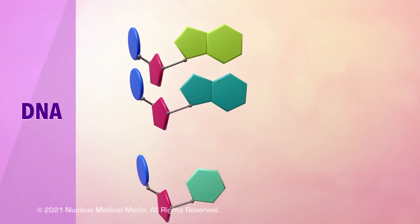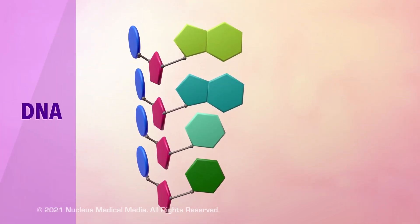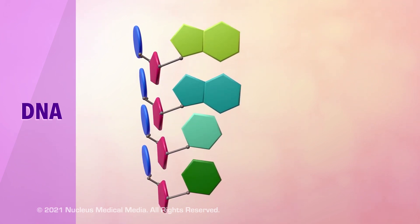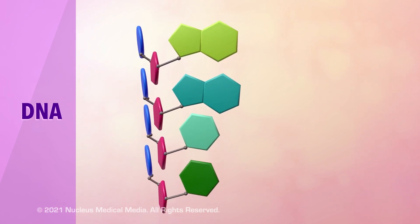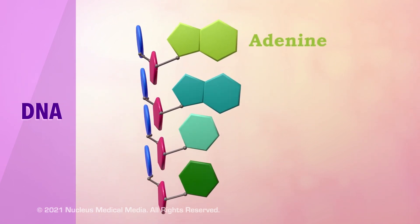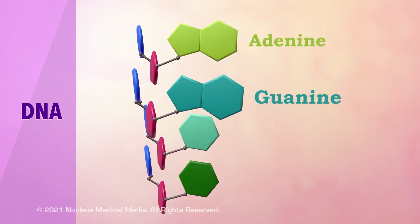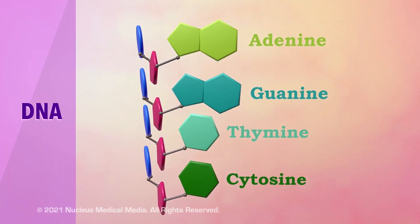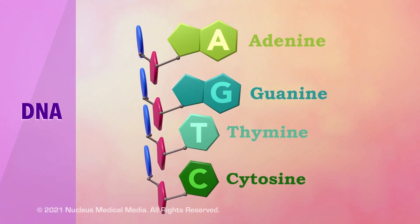Let's focus on the nitrogenous bases in DNA. Each DNA nucleotide contains only one of four possible nitrogenous bases: adenine, guanine, thymine, and cytosine. These four bases are usually abbreviated A, G, T, and C.